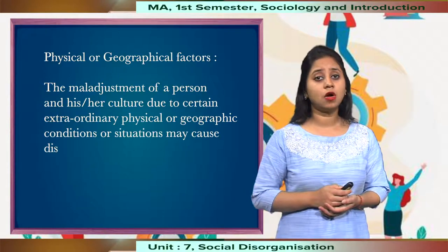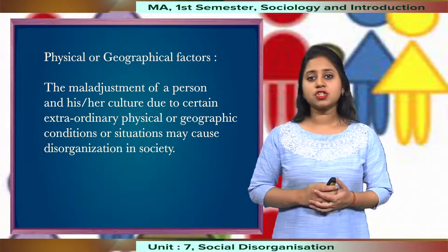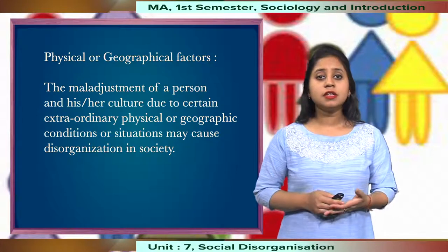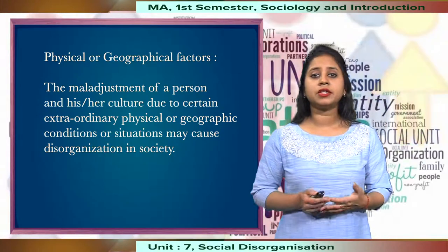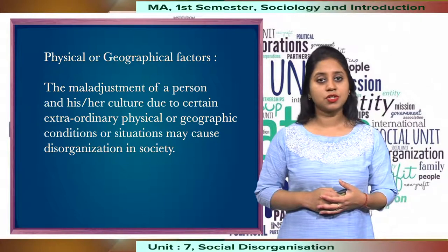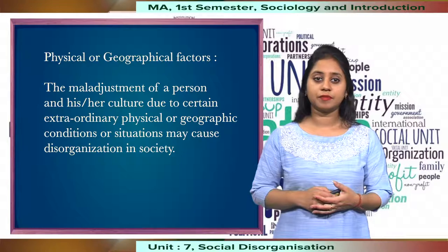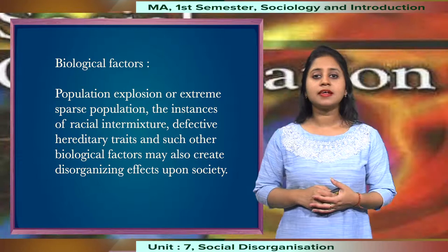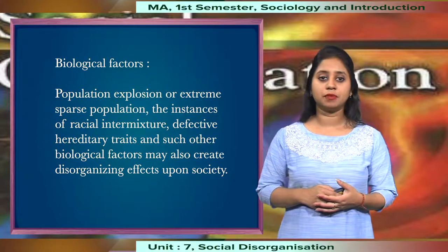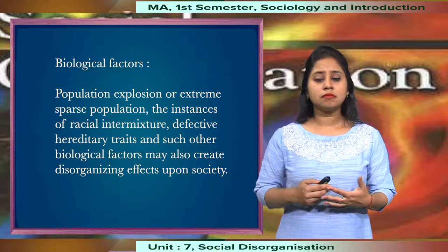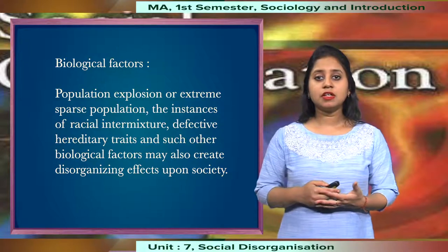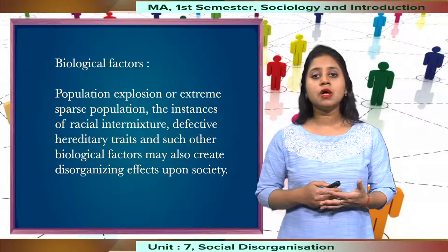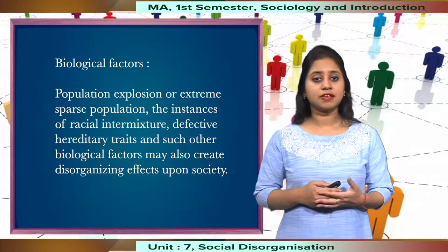Then we have physical or geographical factors. The maladjustment of individuals with their culture due to certain extraordinary physical or geographical conditions may cause disorganisation in society. Then we have biological factors — population explosion or extreme sparse population, interracial intermixture, defective hereditary traits, and other such biological factors may also create disorganising effects upon a society.